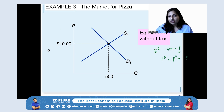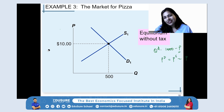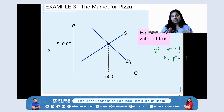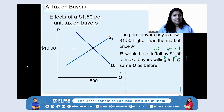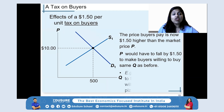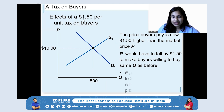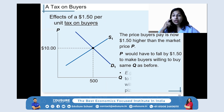For example, if there's a 20% GST, consumers might be paying 120 rupees but producers are receiving only 100 rupees. So there's a difference between the price a consumer pays and the revenue the producer receives. Now let's say the government imposes a tax of $1.5 per unit of pizzas on the buyers.